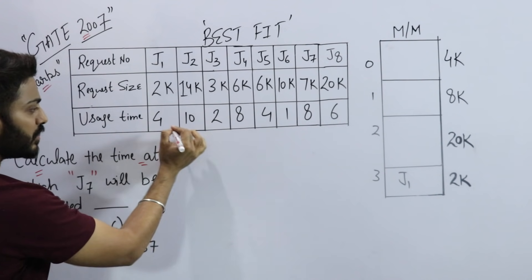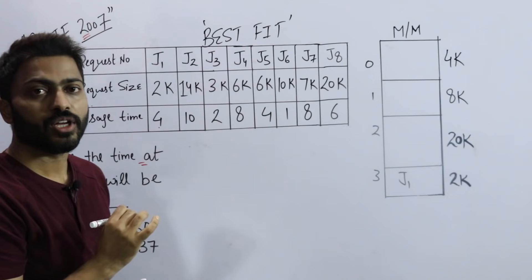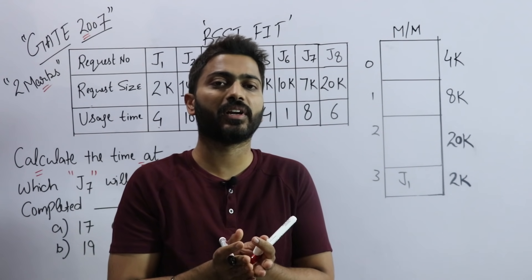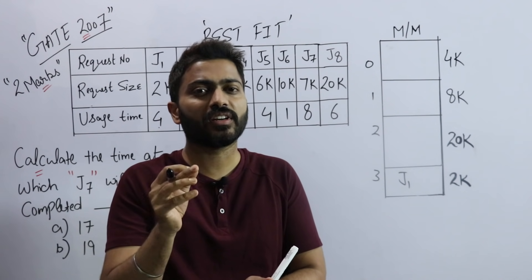The point is that J1 will be using this slot for how much time? For 4 time units. To manage this, you need to take a timeline, otherwise it will be a little complex. This is a tricky question.